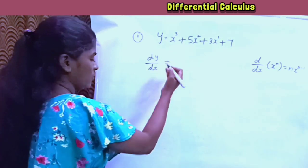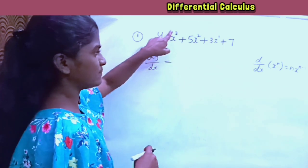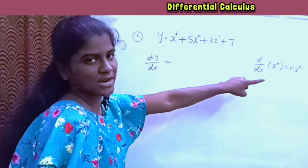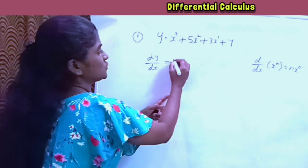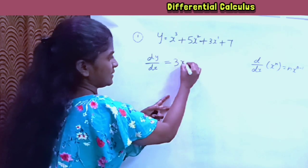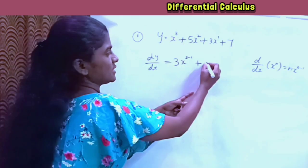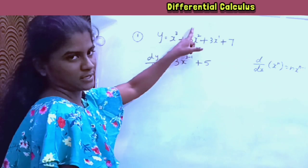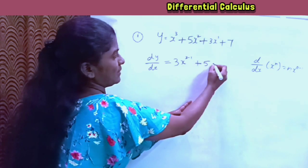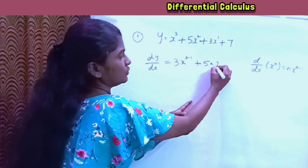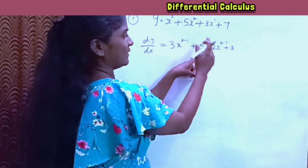Differentiation, one term at a time. For x power 3, we identify x power n where n equals 3 and apply the formula. The first term gives 3 into x to the power of 3 minus 1. Next term: 5 is a constant coefficient, so we bring down the power — 5 into 2 into x power 2 minus 1.